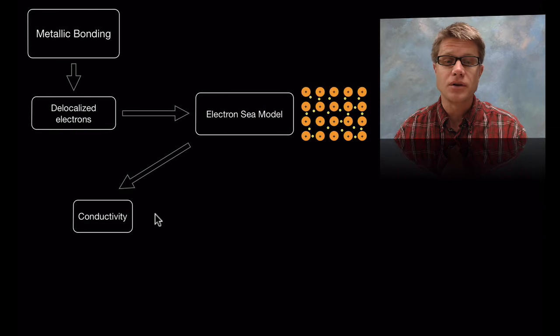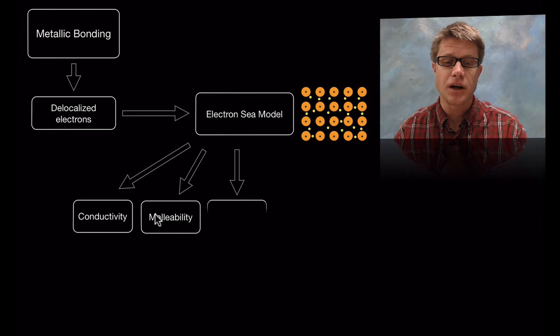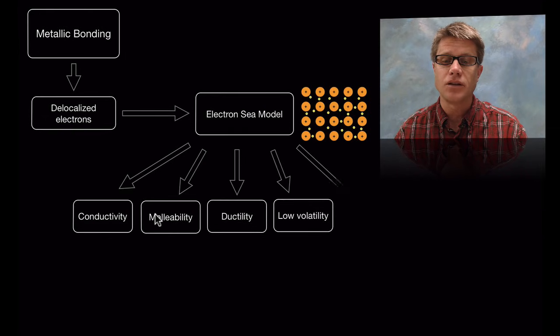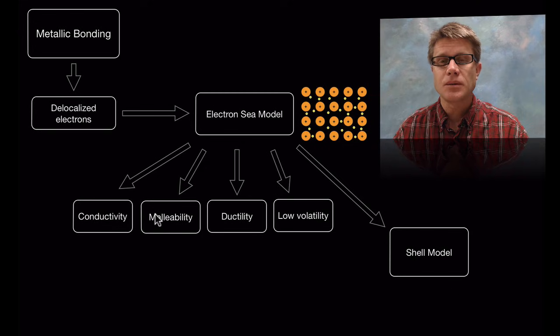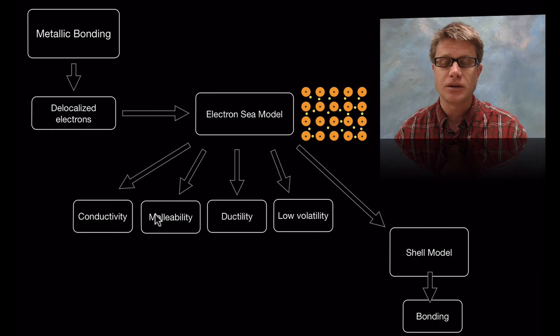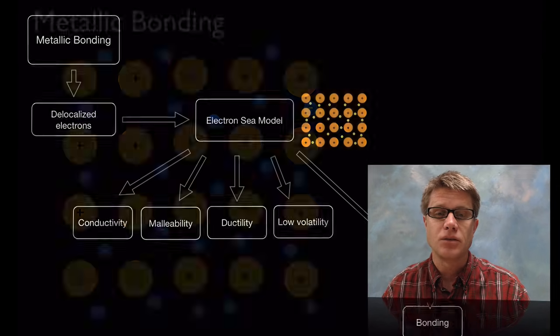It accounts for a lot of the properties of metals, like their conductivity, malleability, ductility, and low volatility. And sometimes we have to go to the shell model however to explain new phenomenon. And we'll get to that when we're looking at melting point. And all of that has to do with bonding.